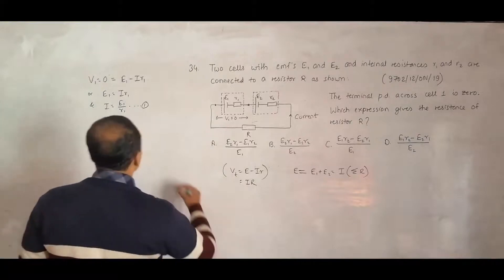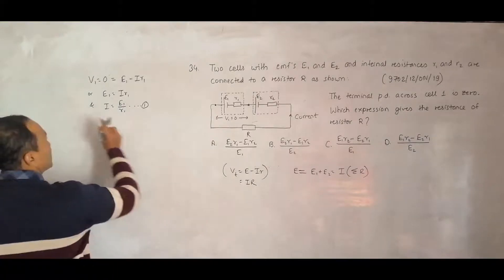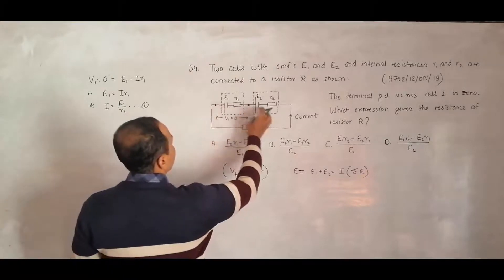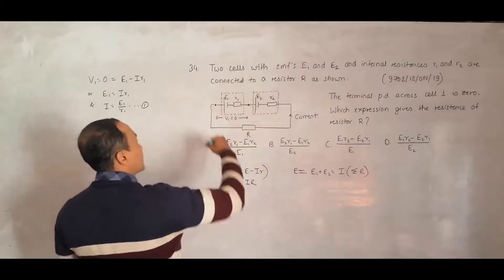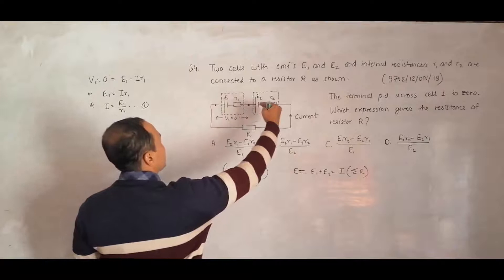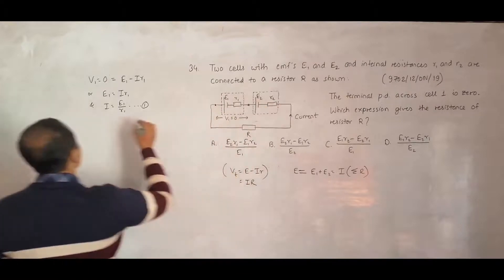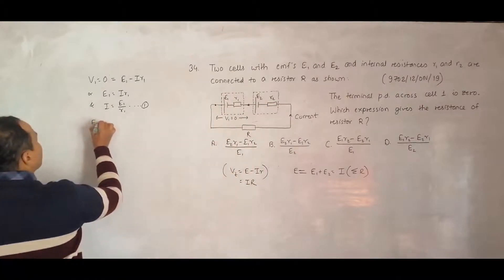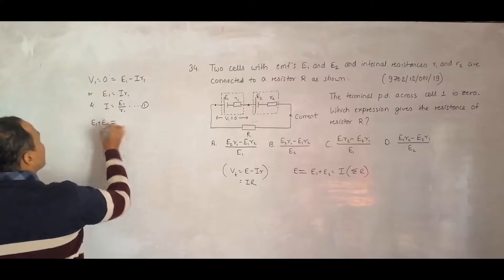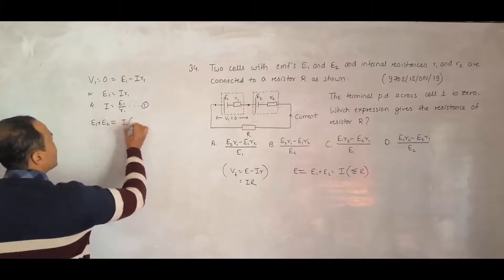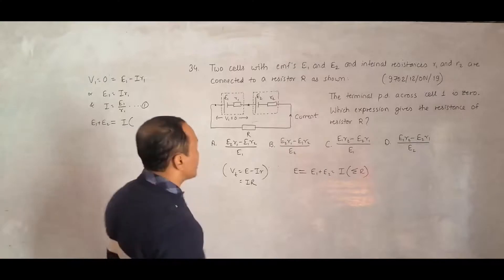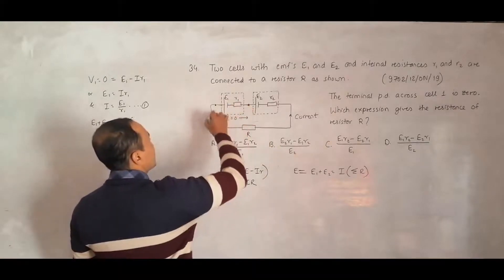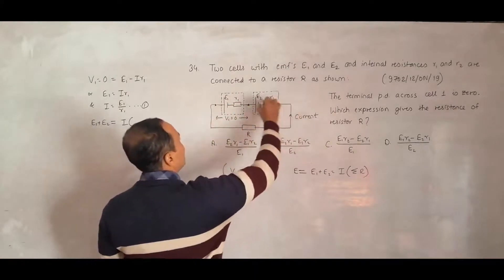Here I will have the total EMF equal to sum of these two, because both of them are in the same direction. The plus is acting in the same direction. That is why I must have E1 plus E2 equal to current into total resistance in the circuit. The total resistance here is R1 plus this R plus this R2.